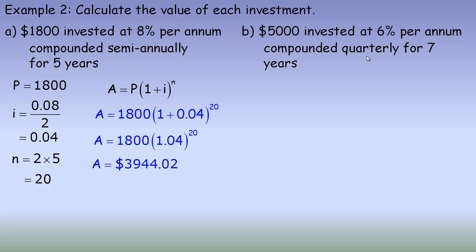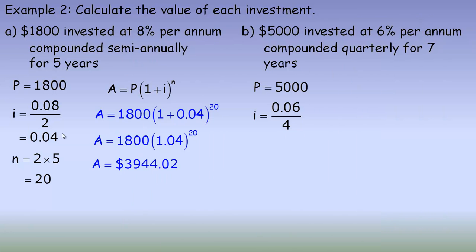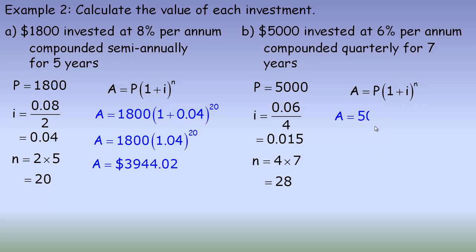The second investment: $5,000 invested at 6% per annum compounded quarterly for 7 years. P equals $5,000. For the interest rate per compounding period, we take 0.06 divided by 4, which gives 1.5%, or 0.015. For n, there are 4 quarterly periods per year for 7 years: 4 times 7 equals 28. Substituting into the formula: A equals 5,000 times 1 plus 0.015 to the power of 28, which simplifies to 5,000 times 1.015 to the power of 28.